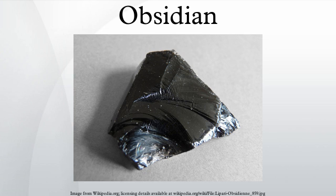Though obsidian is usually dark in color, similar to mafic rocks such as basalt, obsidian's composition is extremely felsic. Obsidian consists mainly of SiO2, usually 70% or more. Crystalline rocks with obsidian's composition include granite and rhyolite. Because obsidian is metastable at the Earth's surface, no obsidian has been found that is older than Cretaceous age. This breakdown of obsidian is accelerated by the presence of water.